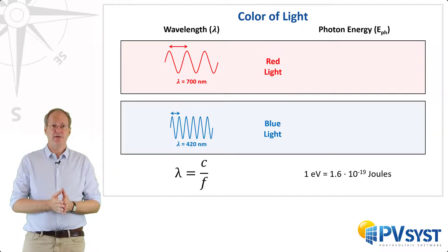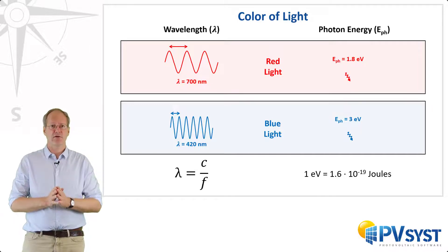However, this small unit is very useful when talking about small quantities of energy, like photon energy. Different colors of light consist of photons with different photon energies. For example, photons of red light each carry 1.8 electron volts of energy, whereas photons of blue light each carry 3 electron volts of energy.